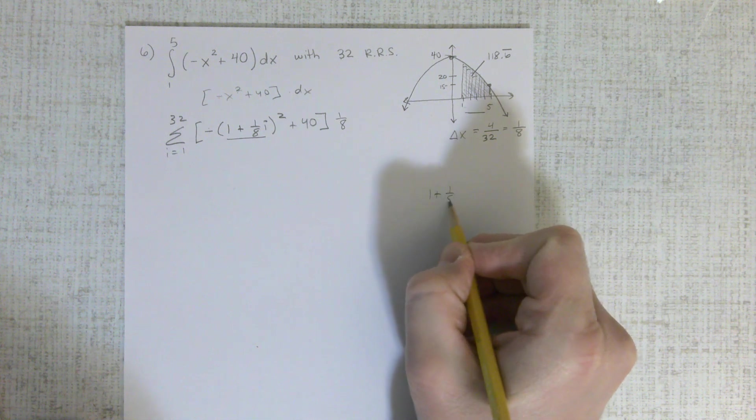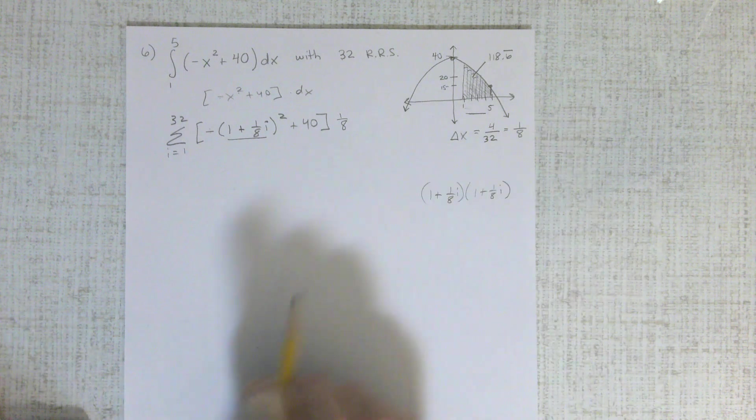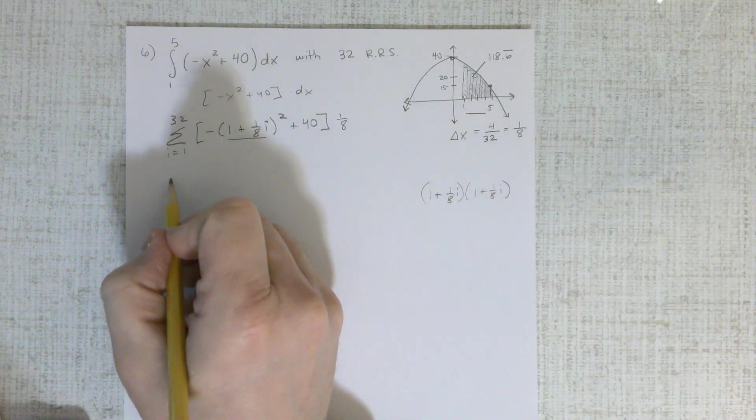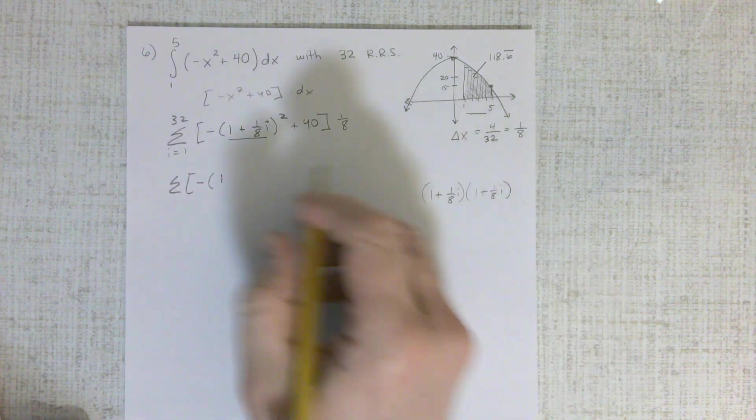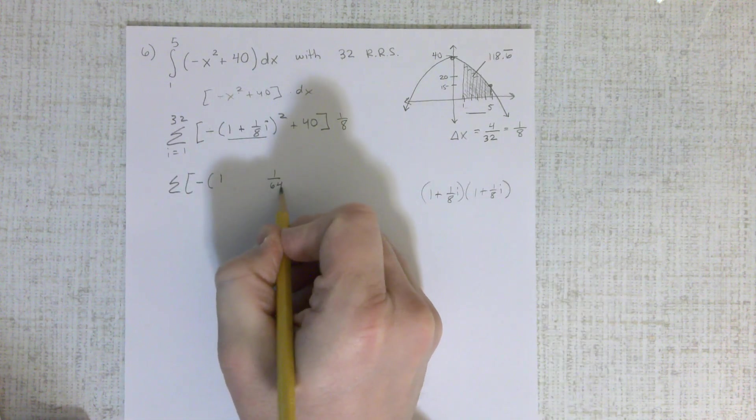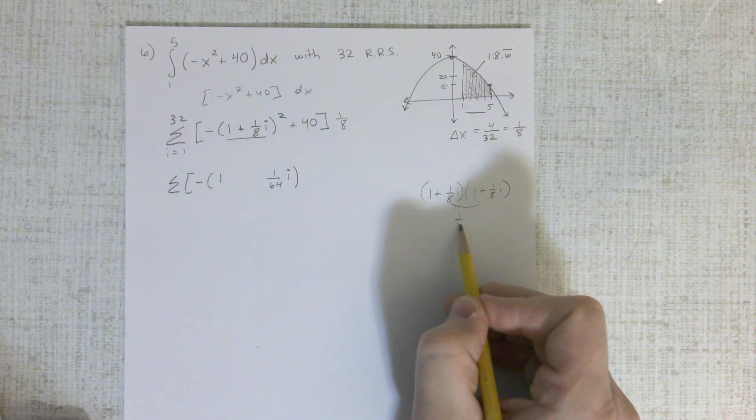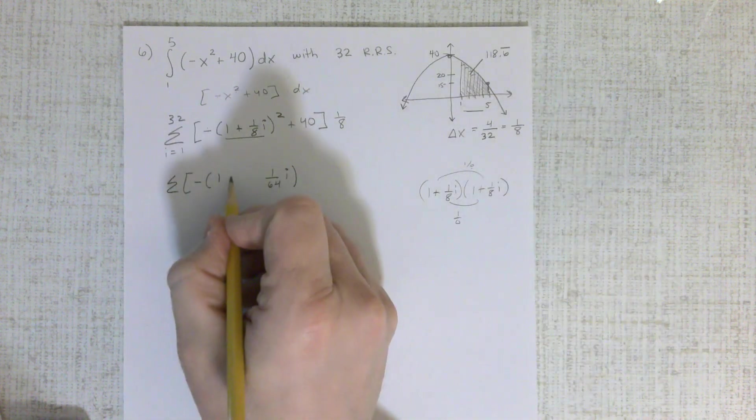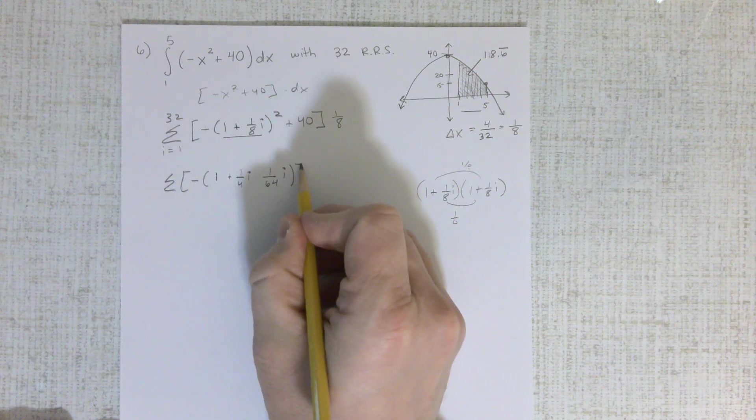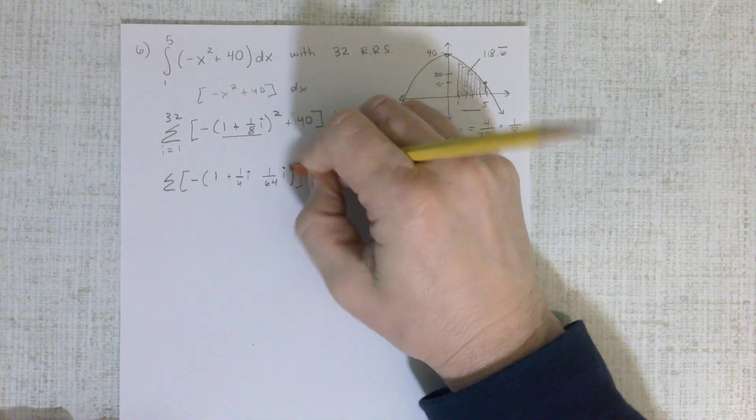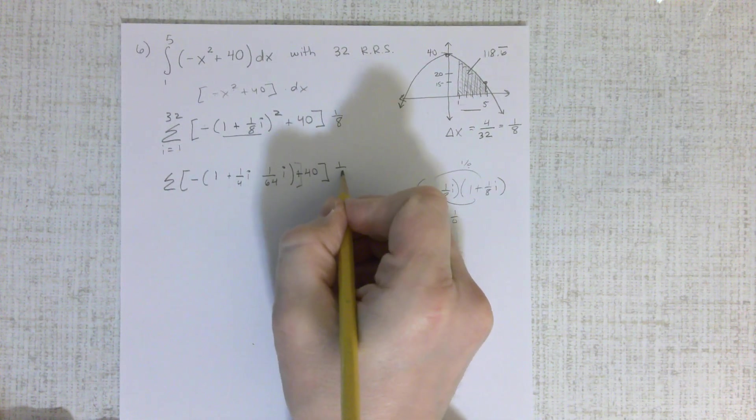Well, this is 1 plus i squared, so just foil that. And if you foil that, let's see here, you'd still have this negative out here, but that'd be 1. And then at the back, it'd be 164 with an i. And that would be 1 eighth and 1 eighth. So that'd be 2 eighths. That would be 1 fourth. I, whoops, don't forget about that 40. That's easy to do. Plus 40, 1 eighth.